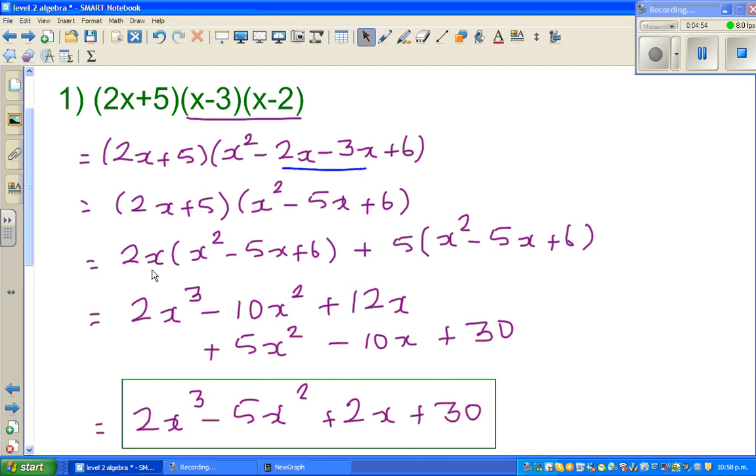x squared minus 2x minus 3x plus 6. This is fine. 2x cubed minus 10x squared plus 12x. Can you see the mistake? This is always good to check. 5 times minus 5x should be minus 25x.